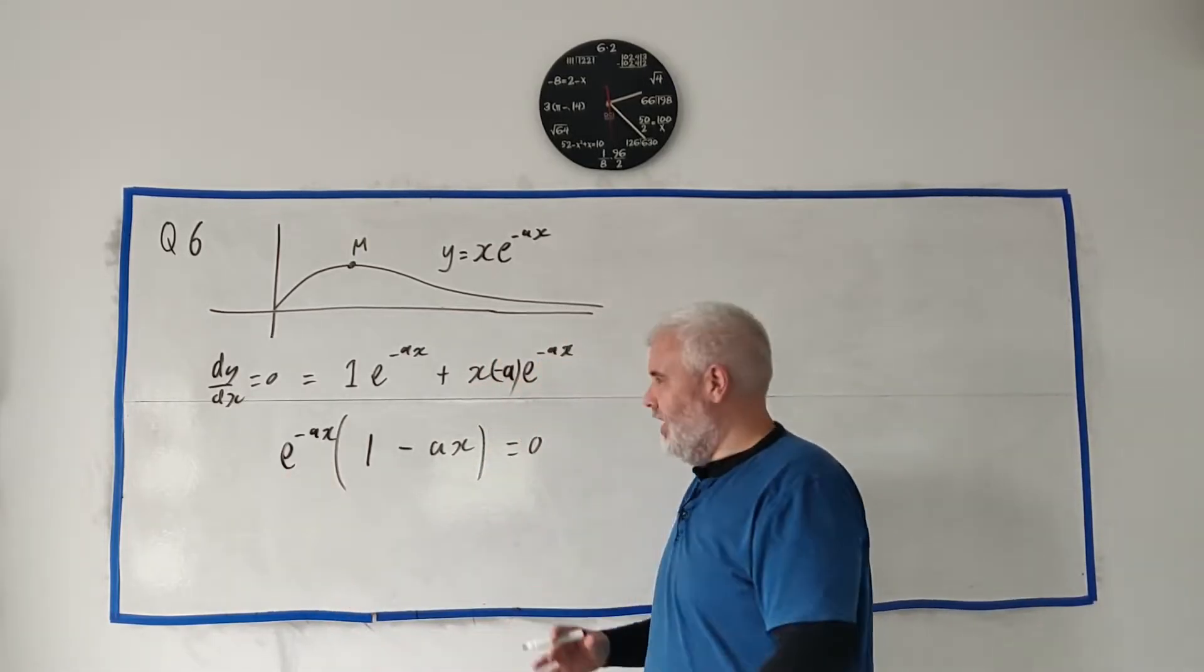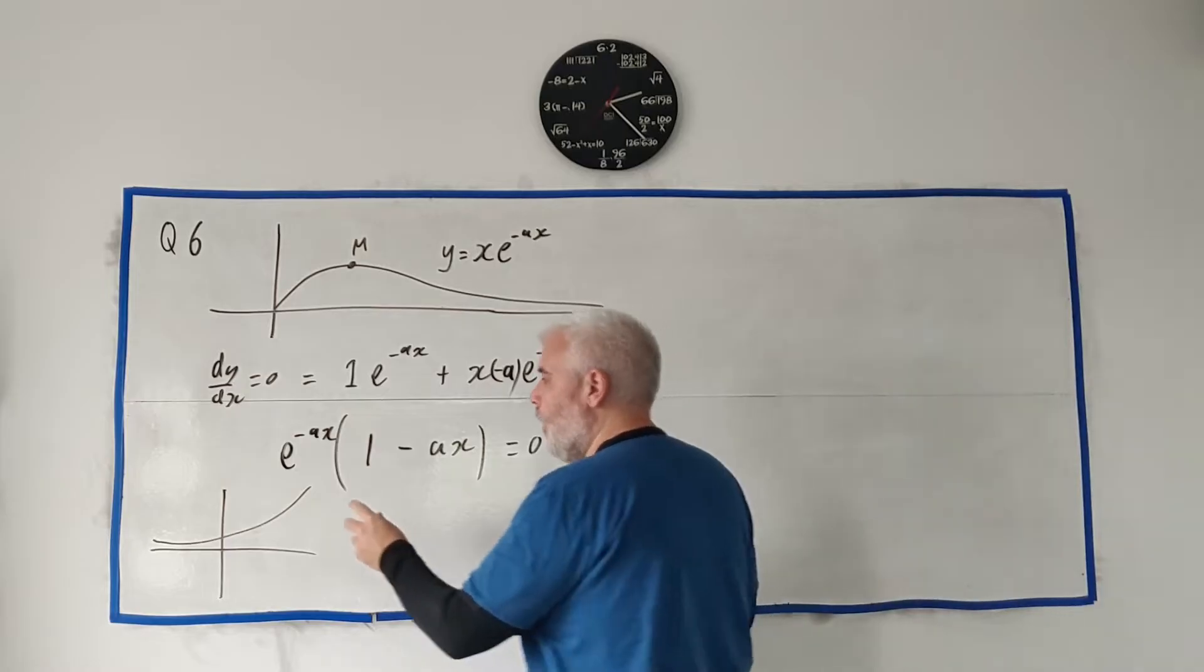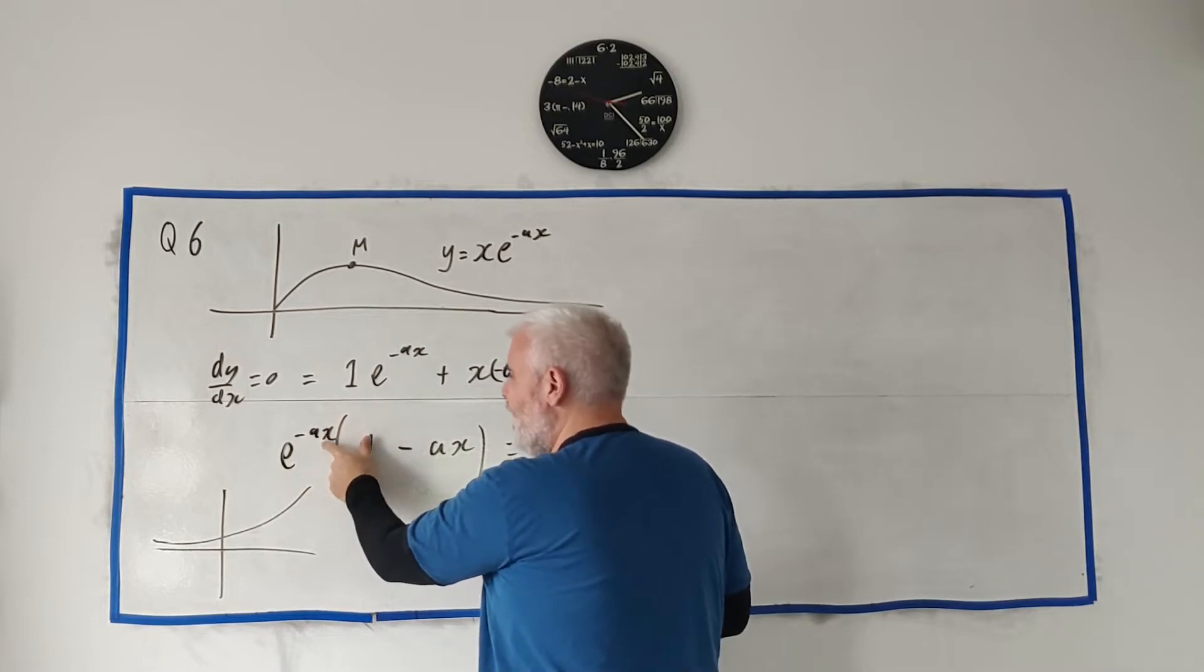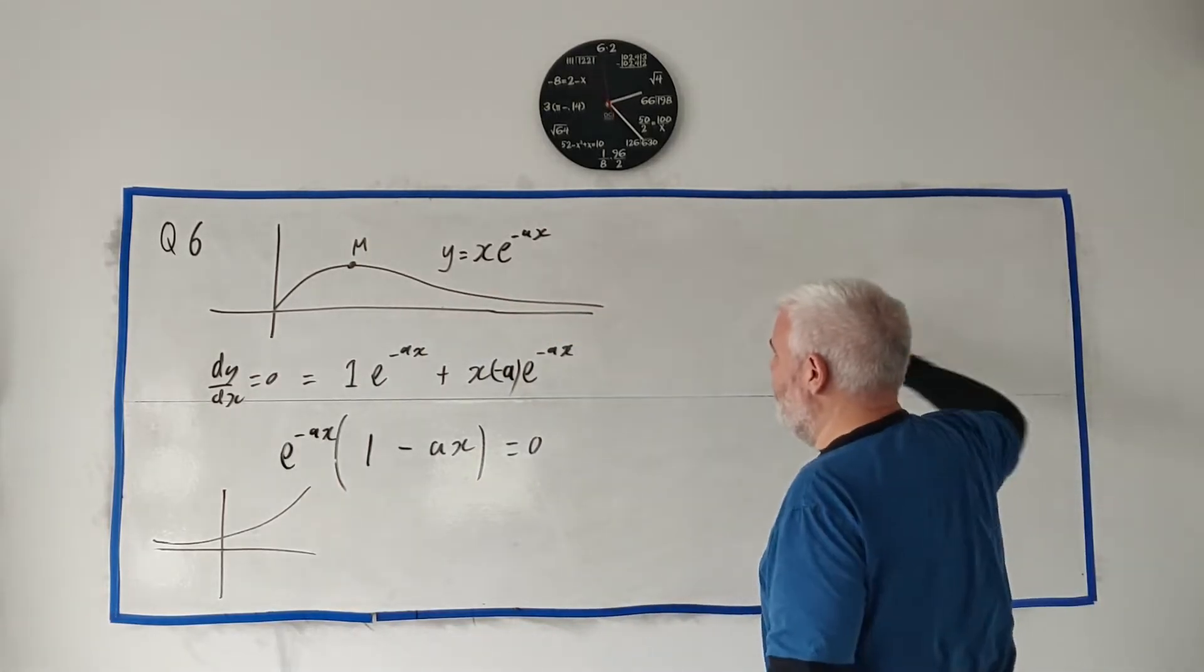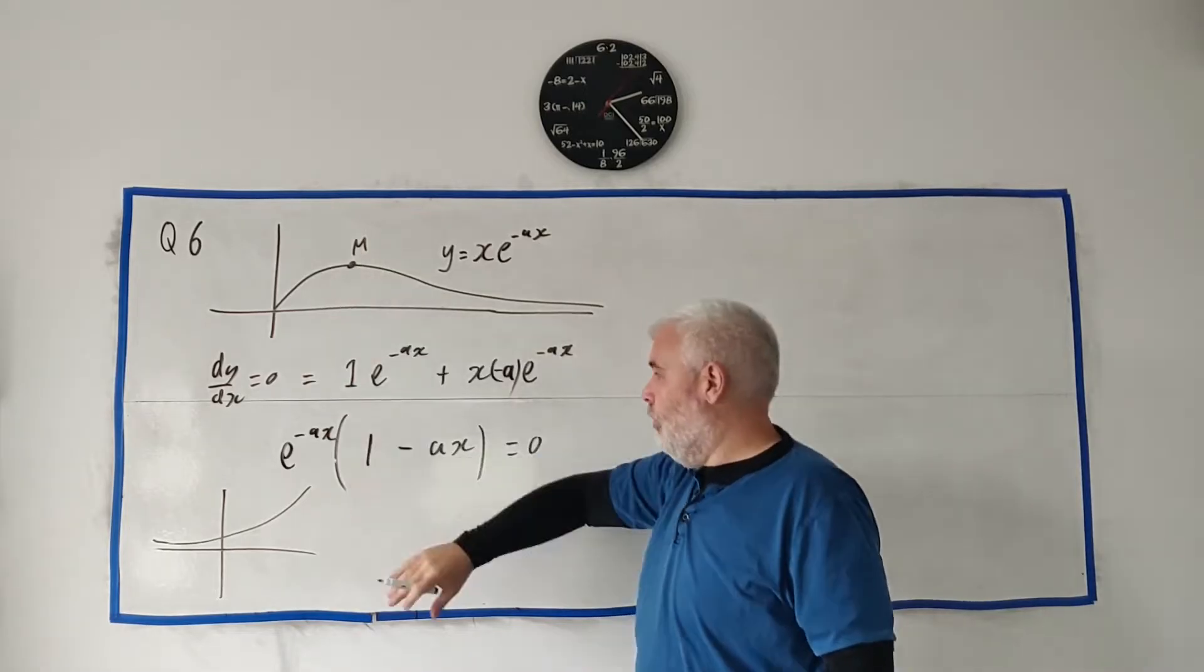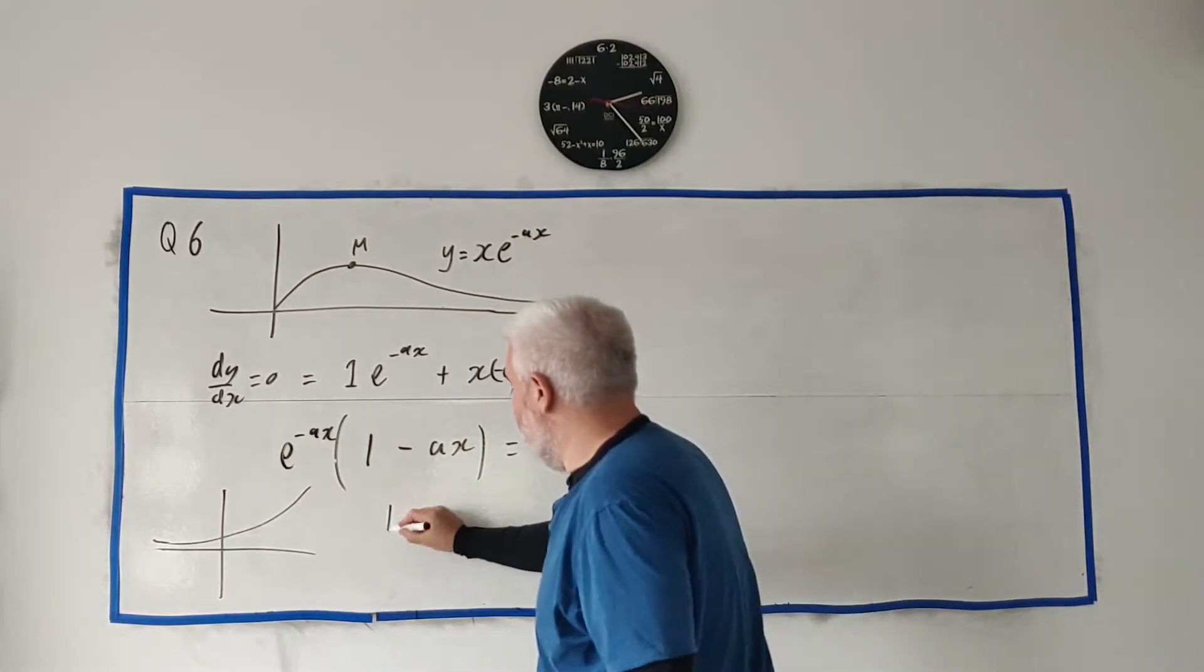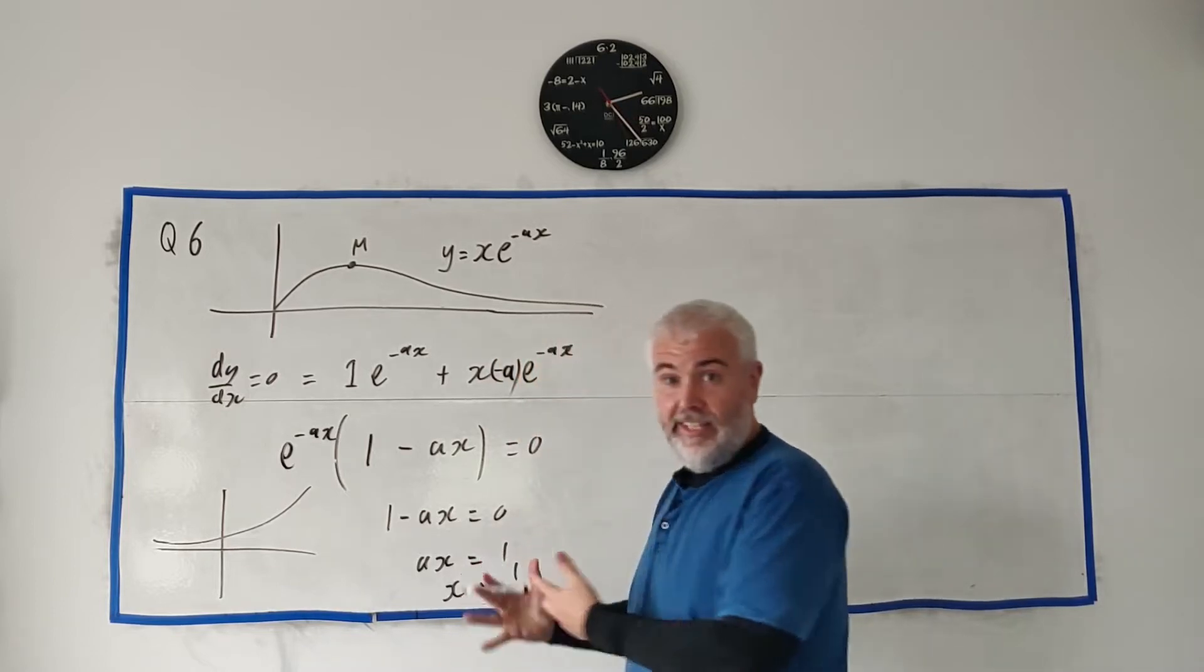Let's take e^(-ax) out of both terms. We get e^(-ax)(1 - ax) = 0. Now e to the power of something can't equal zero except at infinity. e can equal zero at minus infinity, but that's just talking about down here when x approaches infinity. That's not what they're asking about. So we're left with 1 - ax = 0, which means ax = 1, so x = 1/a.